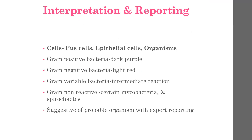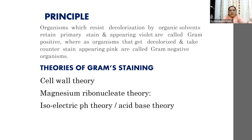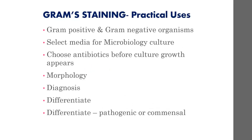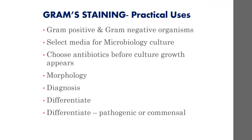The principle of Gram stain: it is a differential stain which resists decolorization by organic solvents — organisms that retain the primary stain appear violet and are called gram-positive. Organisms that are decolorized and take the counter stain appear pink and are called gram-negative. There are three theories: cell wall theory, magnesium ribonucleate theory, isoelectric pH theory, and acid-base theory.